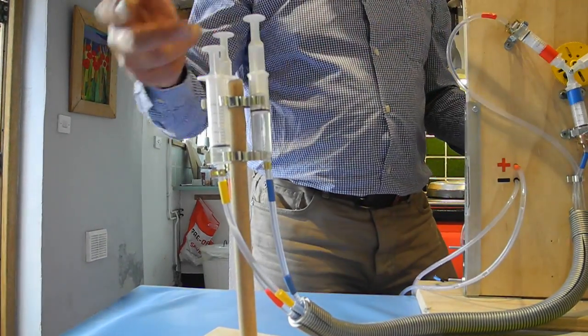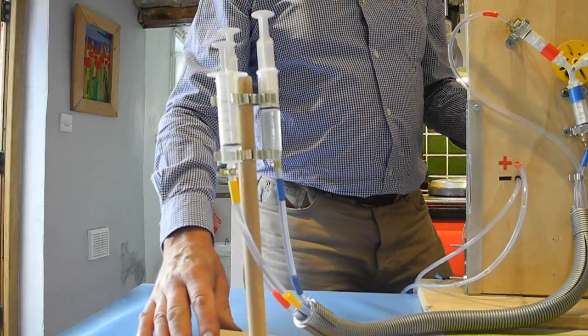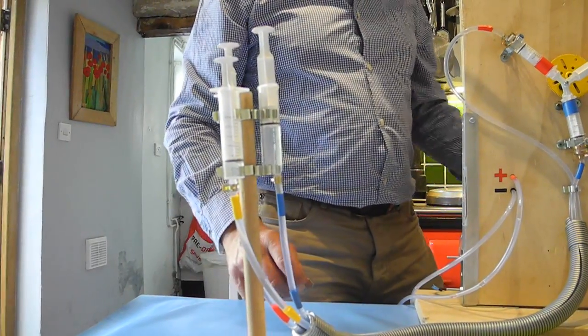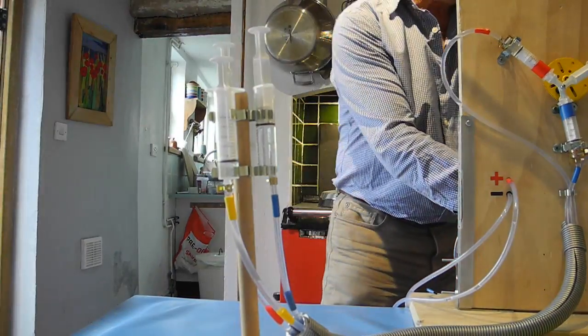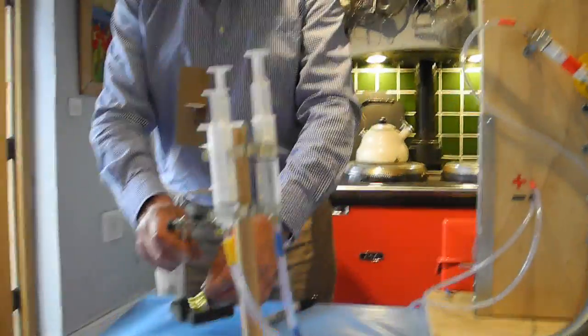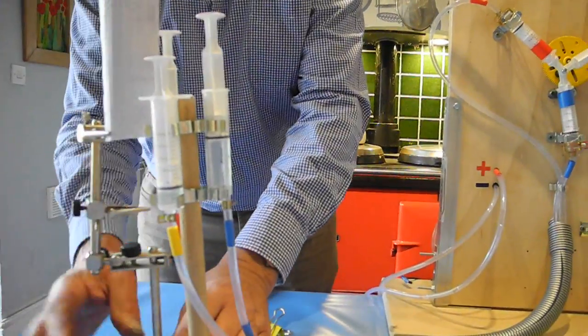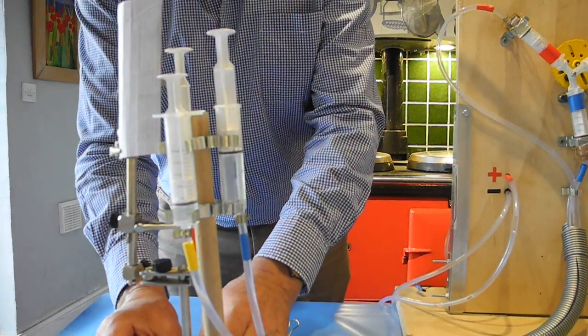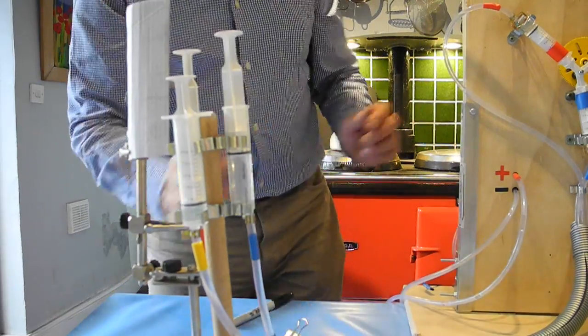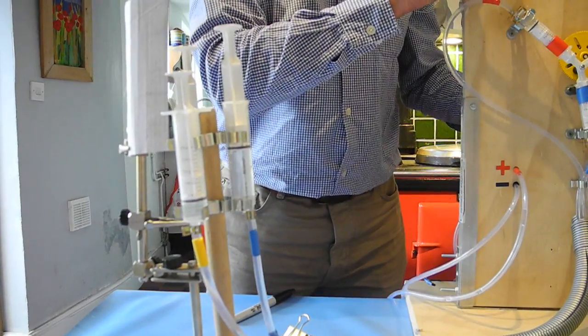Now if we imagine that the height of the plunger represents the voltage at any instant, then I can put a scale next to the plunger and you can see the alternation in voltage. Let me start the power station up again.